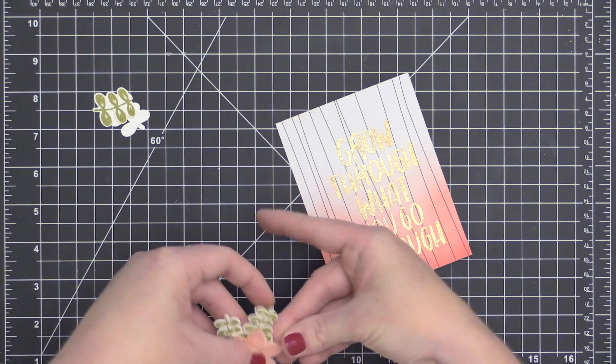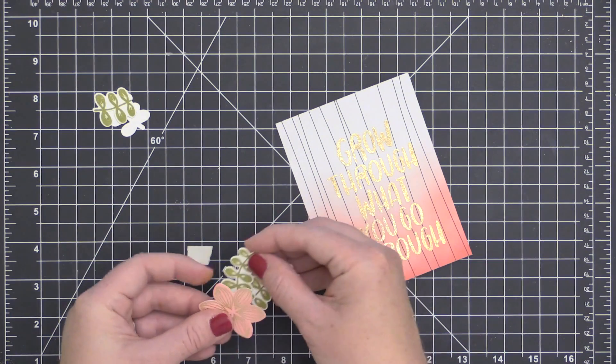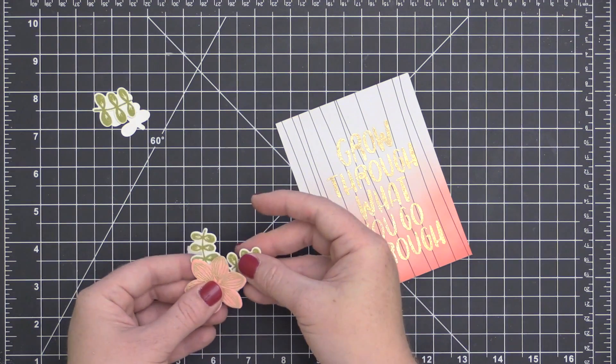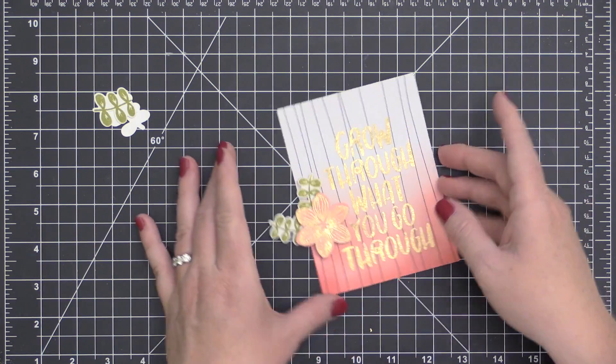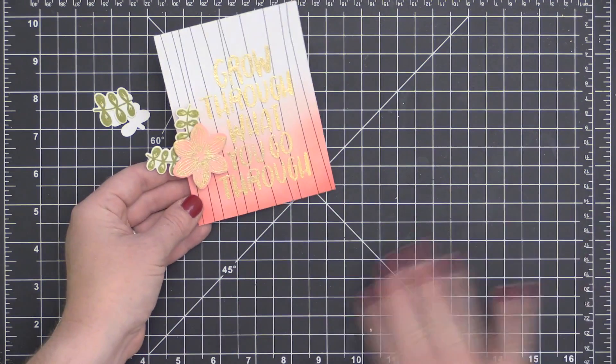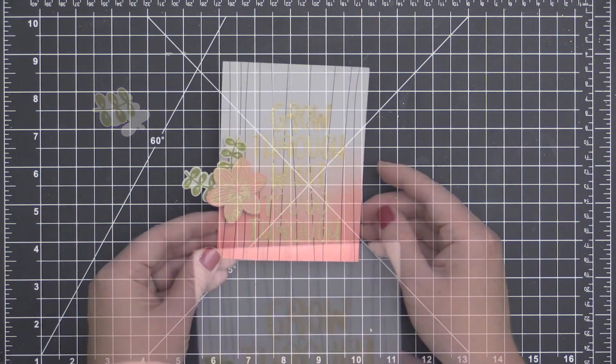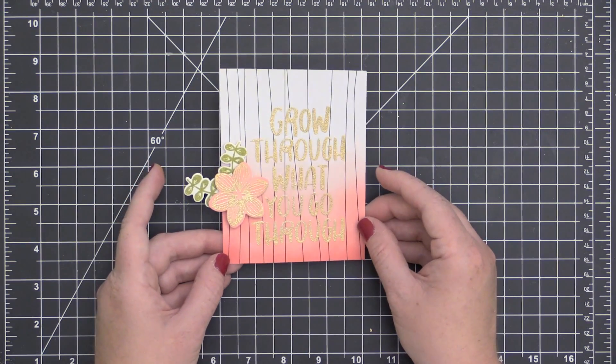Along with being great to blend with, these Distress Oxide inks are great for stamping too. I went ahead and stamped some of my images using those Distress Oxide inks onto some Neenah Solar White cardstock. I used the coordinating dies to cut them out.